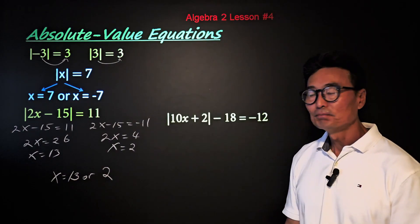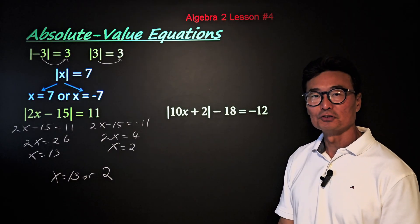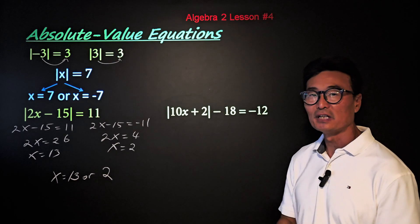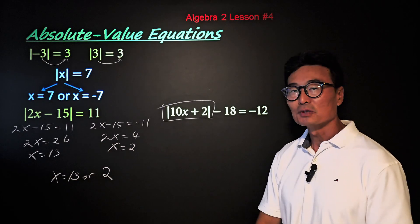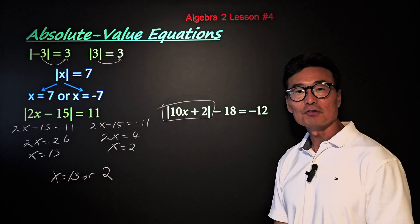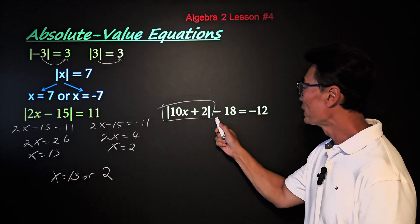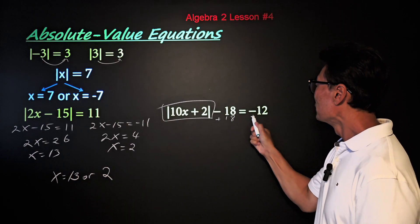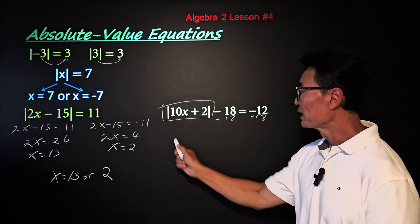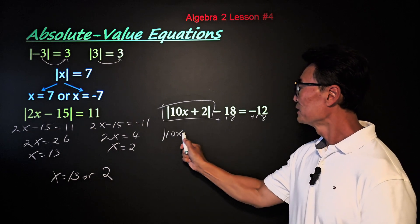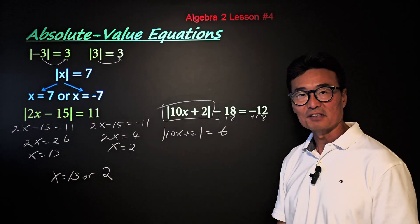Here's our second example. If you have absolute value of 10x plus 2 minus 18 equals negative 12, we need to isolate the absolute value portion on the left side. So we add 18 to both sides, giving us absolute value of 10x plus 2 equals positive 6.